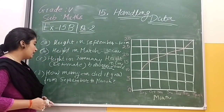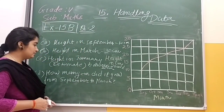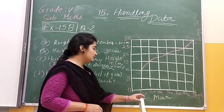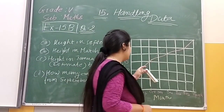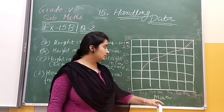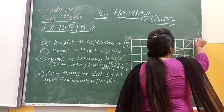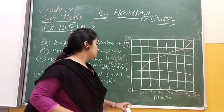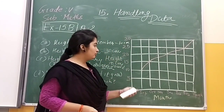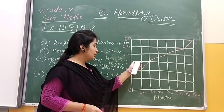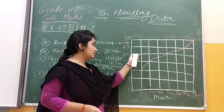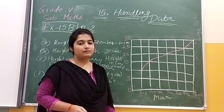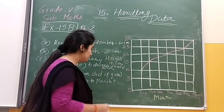The next question is: how many centimeters did it grow from September to March? September mein kitni thi height? 10 centimeter. And March mein kitni thi? Here we can see 30. Kitna grow hua hamara plant? It grew 5, 10, 15, and 20 centimeter — so 20 centimeter.